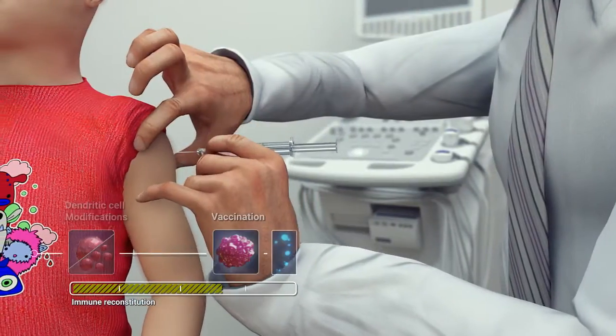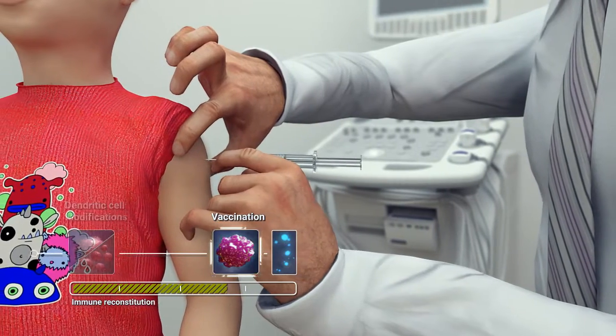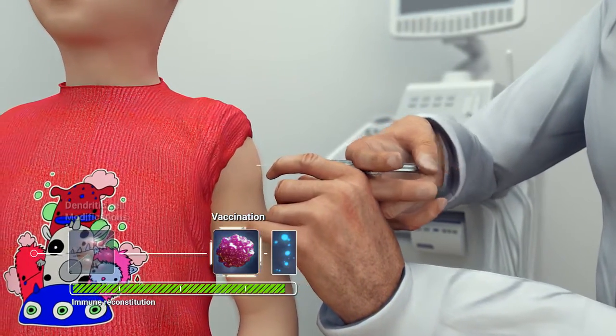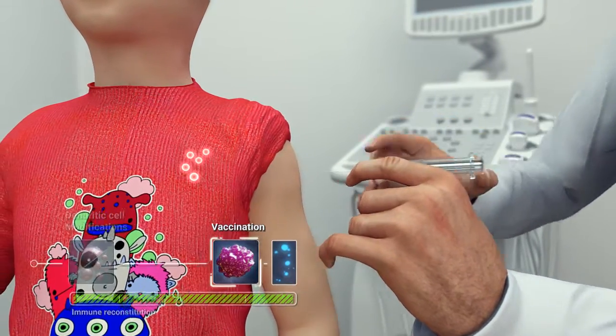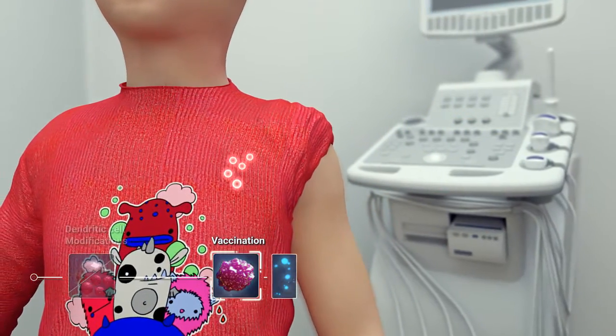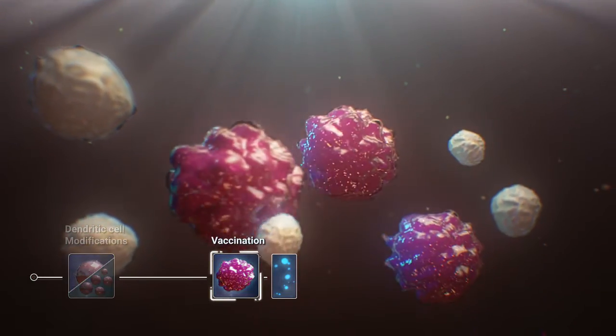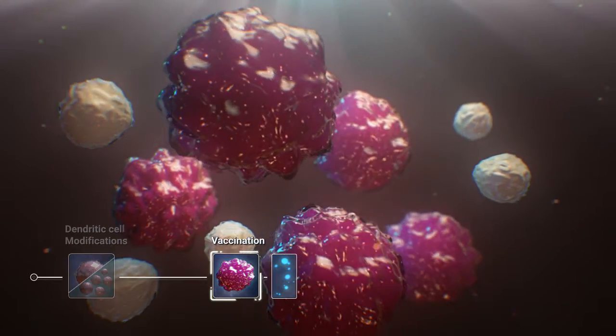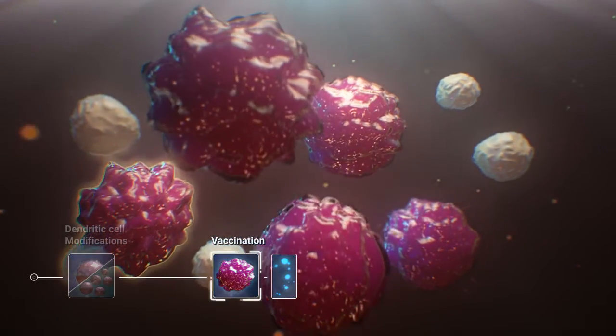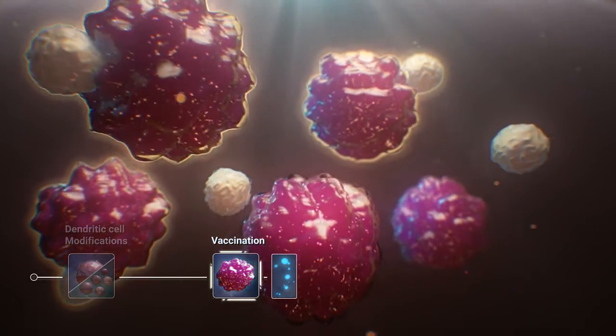The vaccination will be given when the cord blood-derived immune system is sufficiently reconstituted in the patient six to eight weeks after transplantation. The vaccination takes place close to lymphoid organs where the injected dendritic cells will encounter naive T cells. The dendritic cells will stimulate these naive T cells specific for the presented tumor antigens.